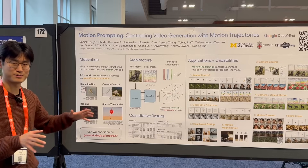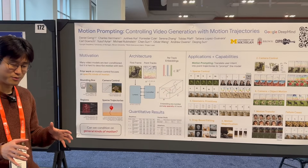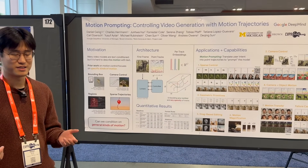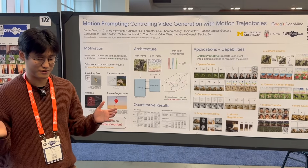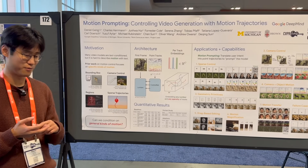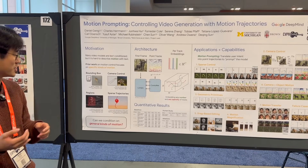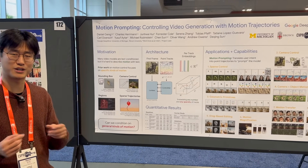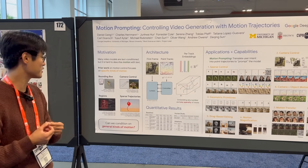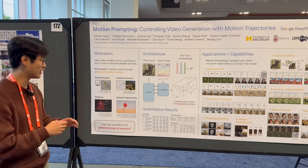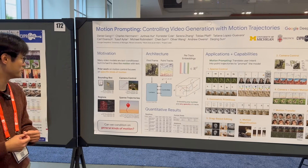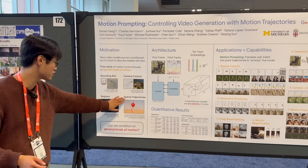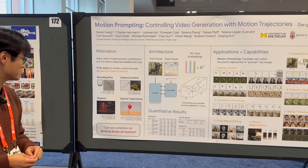The whole idea behind this paper is we want to do motion-conditioned video generation. There are a lot of text-conditioned video generation models, but what can we do with motion conditioning? This is actually a pretty well-studied area. There's a lot of prior work, and they do lots of different kinds of motion conditioning — bounding box control, camera control, sparse trajectories, region-based motion.